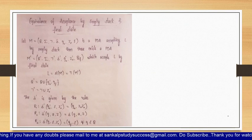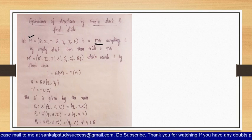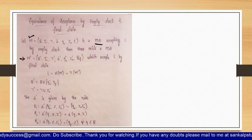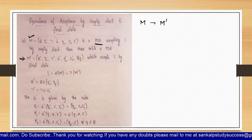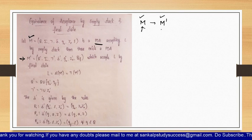Let M be the seven-tuple notation which is a pushdown automata — a PDA — which is accepting language L by empty stack. If this pushdown automata exists, then there exists another pushdown automata M-dash which will accept language L by final state. So M is accepted by empty stack and M-dash is accepted by final state, where both pushdown automata recognize the same language but differ in acceptance mode.